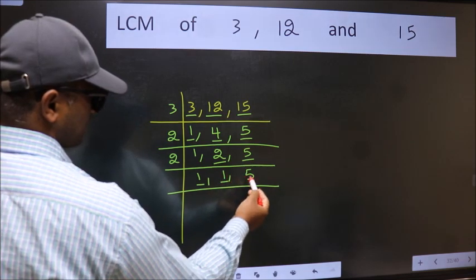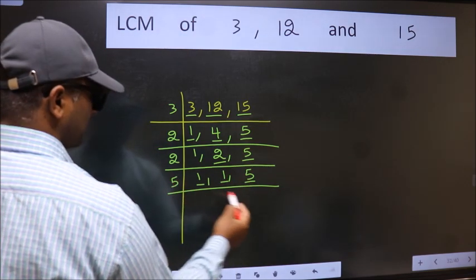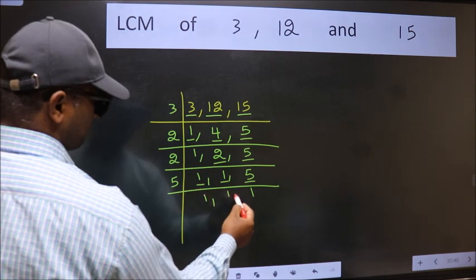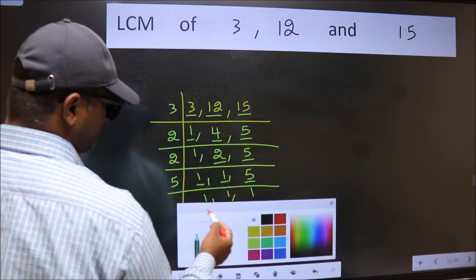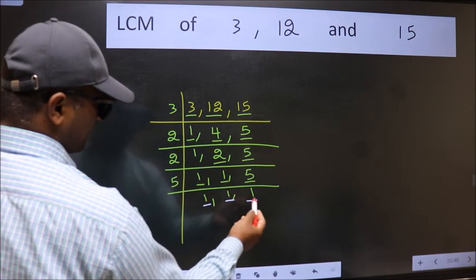So focus on the next number 5. 5 is a prime number. So 5, 1 is 5. So we got 1 in all the 3 places.